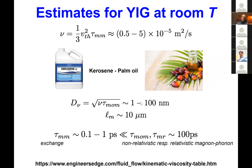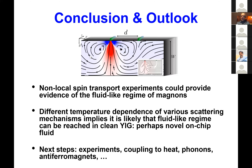Some estimates for YIG: assuming magnon-magnon interactions are determined by exchange, the magnon-magnon scattering time is a fraction of a picosecond. The momentum relaxation length is on the order of 100 picoseconds, and the magnon relaxation time should be somewhat longer, so we're in the correct time-scale hierarchy. The spin diffusion length is ~10 micrometers; the momentum relaxation length is estimated between 1 and 100 nanometers. If you plug this in, the kinematic viscosity is somewhere between kerosene and palm oil.